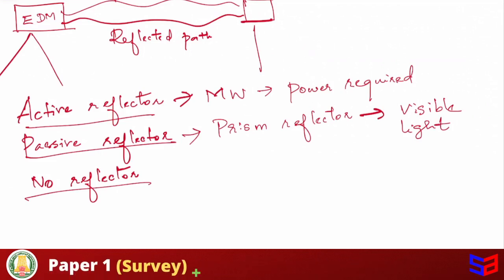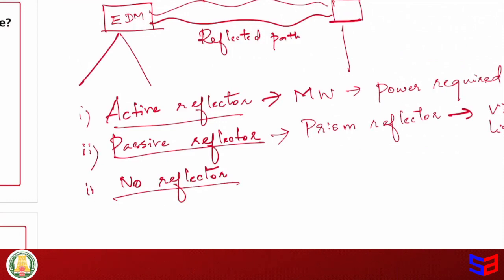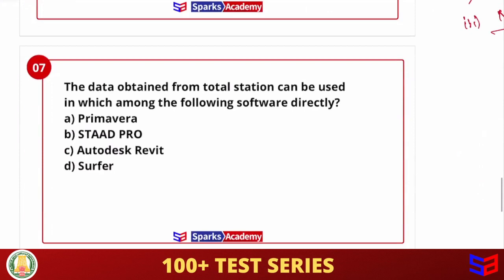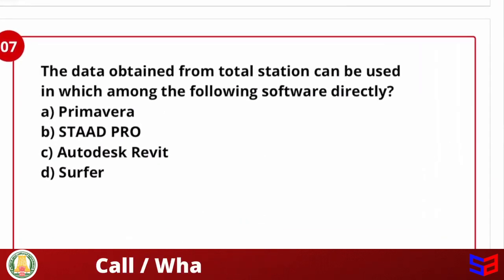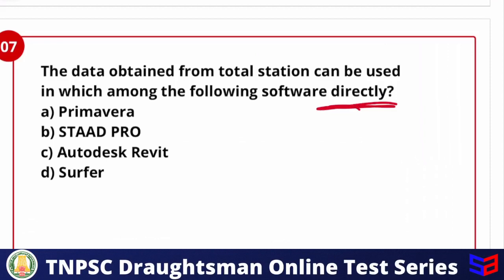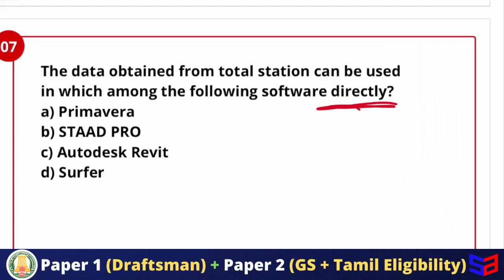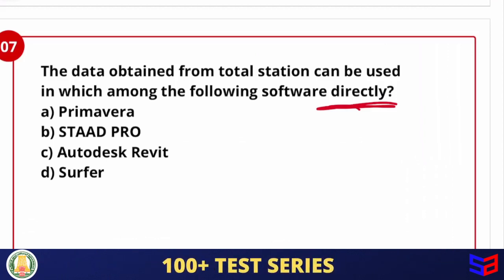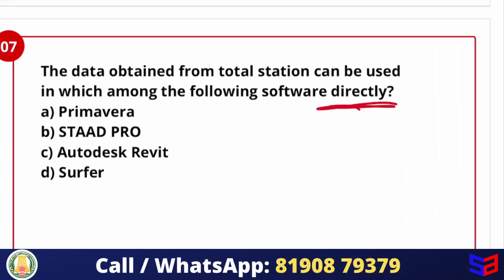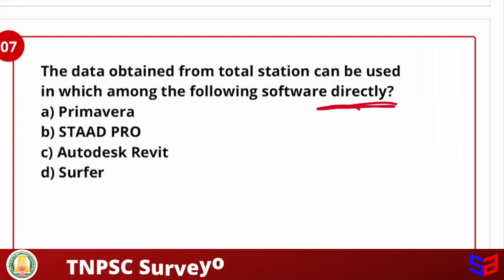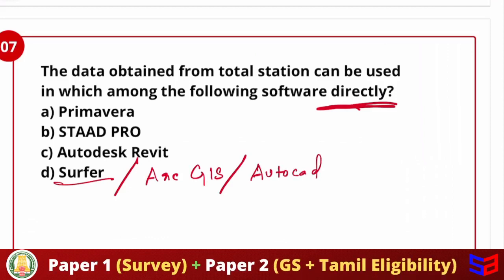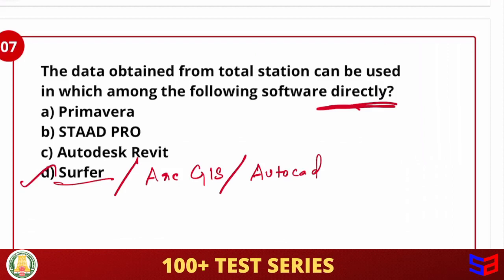Can be used in which among the following software directly? Once we use Total Station, we collect data and we use software to incorporate. Then we use computer software to generate maps. So we have direct values and data. So directly, surfer, ArcGIS, and AutoCAD. These three software, I have direct data. And Primavera, Staad Pro, Autodesk, these three are indirect in Total Station.